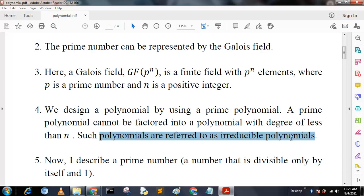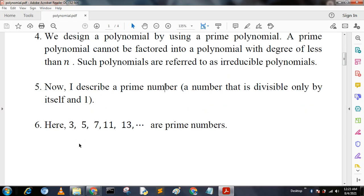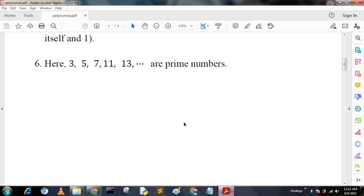If a polynomial cannot be factored, such polynomial is referred to as irreducible polynomials. Now I describe prime numbers. A prime number is a number that is divisible only by itself and one. Here are some examples: 3, 5, 7, 11, 13 - all are prime numbers.